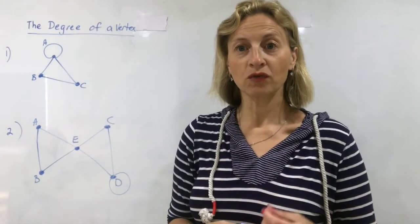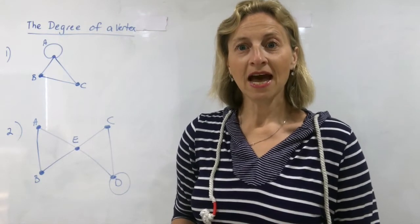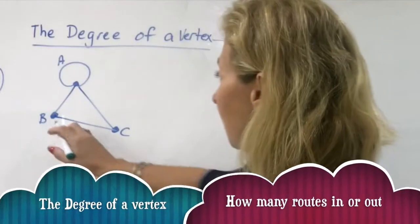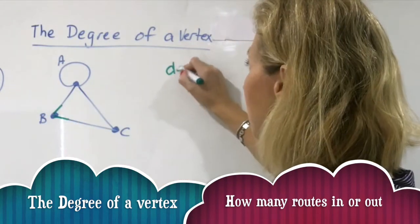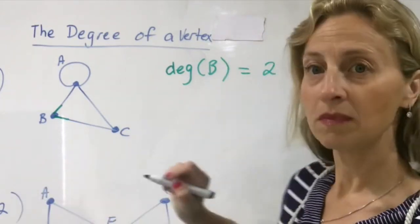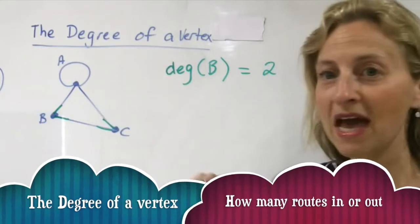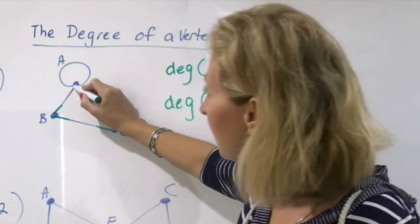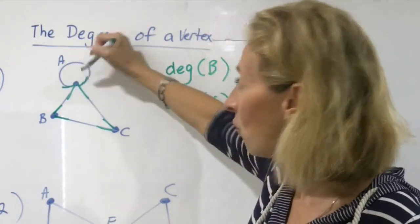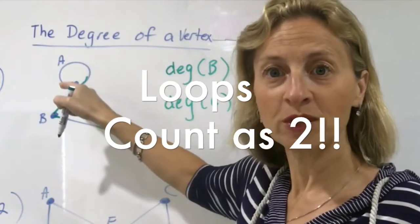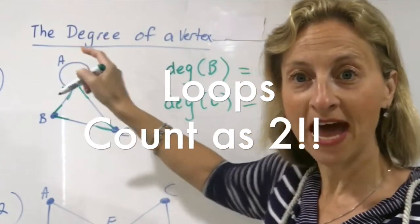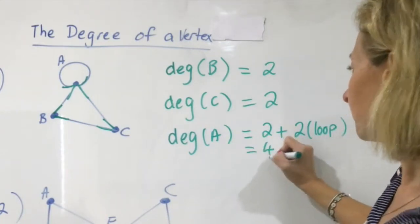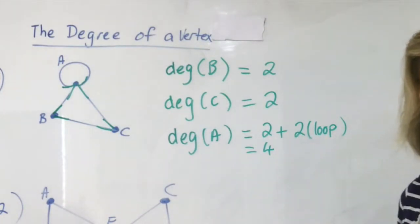Now we need to know how to describe the degree of a vertex. The degree of a vertex just means how many ways there are of going out of that vertex. Looking at B, there are two roads going out of B, so the degree of B is 2. The degree of C is also 2. For A, even though the loop turns back into itself, it still counts as two ways going out of A, so the degree of A is 2 plus 2 for the loop, which is 4. Remember: a loop counts as 2.